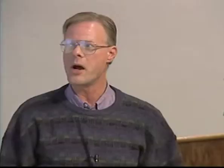We divide cells into two major categories — prokaryotic and eukaryotic — based on their structure, the kinds of things found in them, their metabolism, and the sequence of their genetic material, which tells us a lot about evolution. These two categories fall out along domain lines: the Archaea, the Bacteria, and the Eukarya.